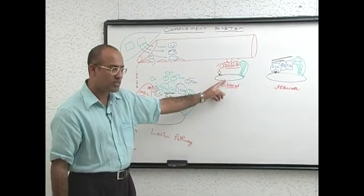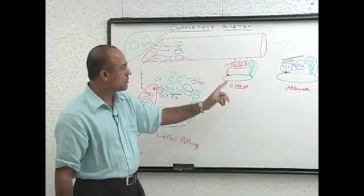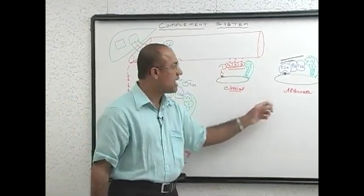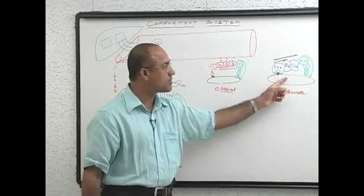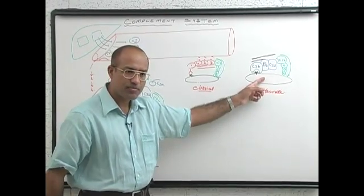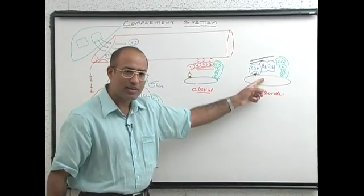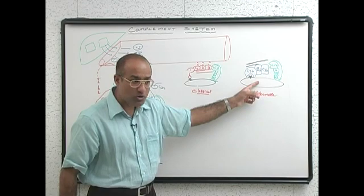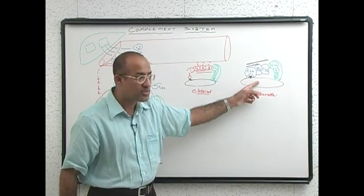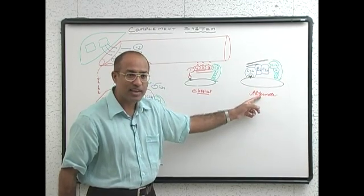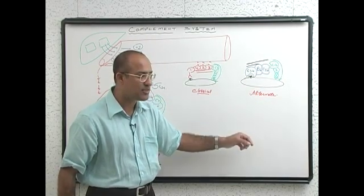IgM — those classes of antibodies. The alternate pathway is activated when antibodies are not even present. Without the presence of antibodies, the alternate pathway can be activated as a first line of defense.